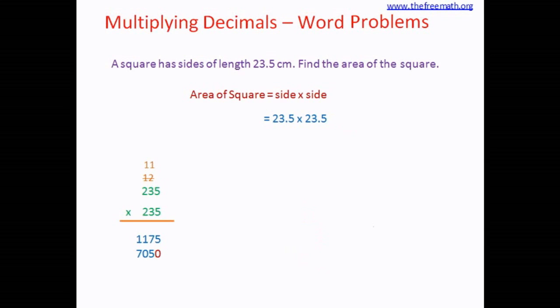The next step is to multiply by 3. Since 3 is at tens place, we write down 0 first and then multiply. 3 times 5 is 15, we write down 5, 1 is carried over. 3 times 3 is 9, 9 plus 1 equals 10, we write down 0, 1 is carried over.